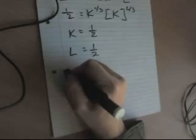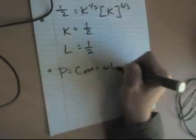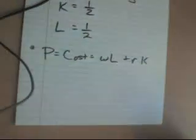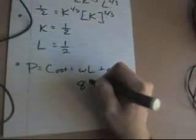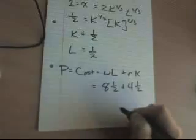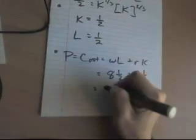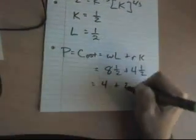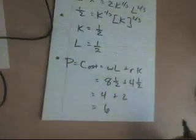Last thing to do is talk about the cost. Price is equal to cost which is equal to the amount you spend on labor plus the amount that you spend on capital. What was the wage rate? Back here it was 8. You are buying 1/2 a unit of labor. What was the rental rate from back here? It's 4. You are buying 1/2 a unit of capital. So the cost which is equal to the price under perfect competition is 4 plus 2 or a grand total of 6.